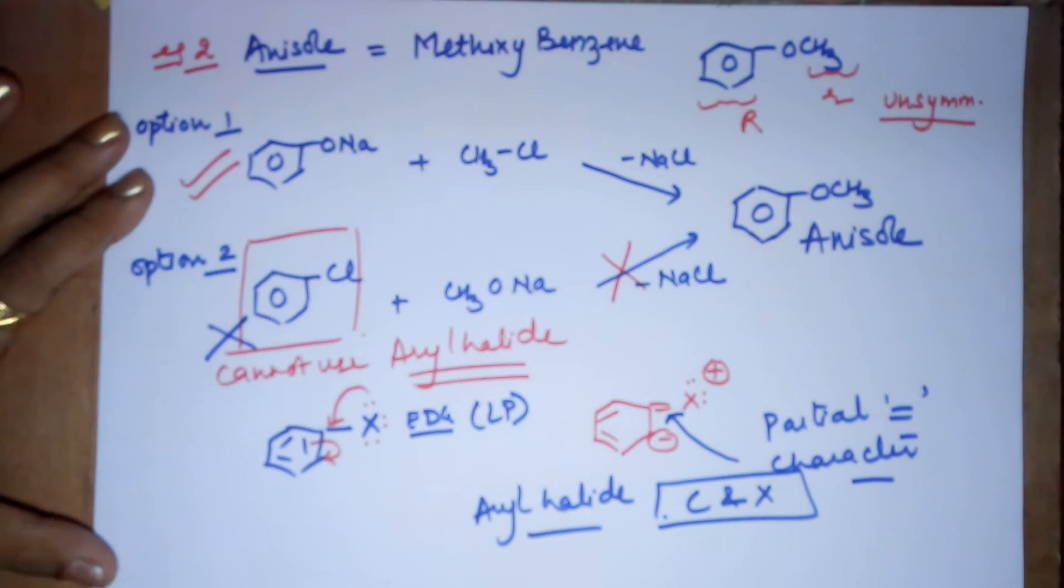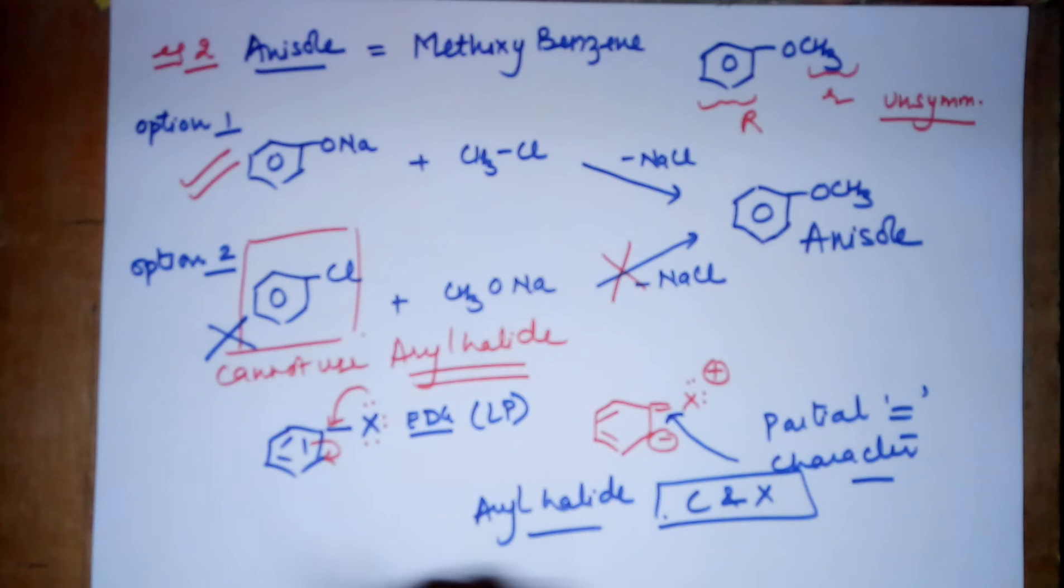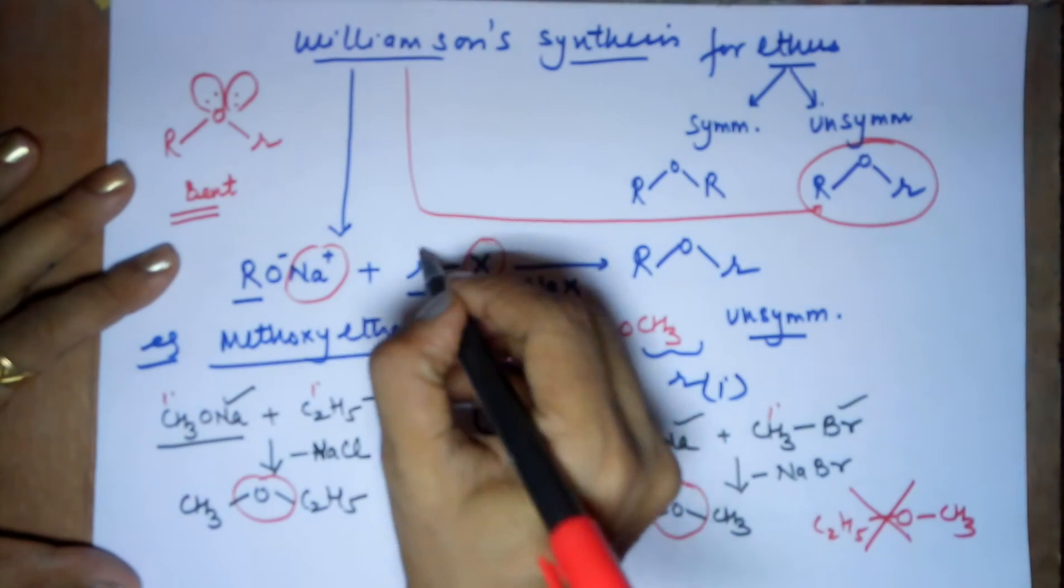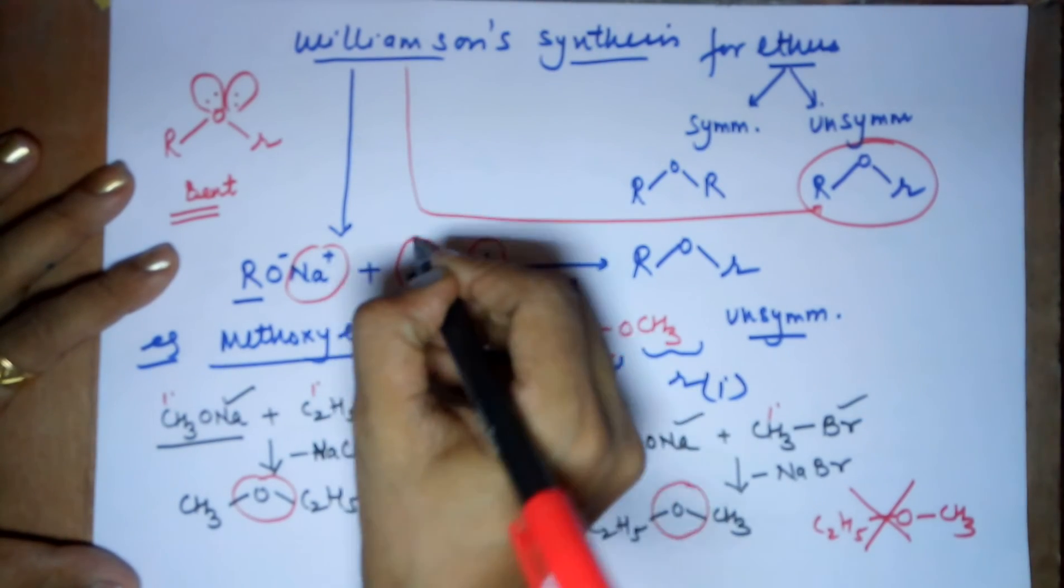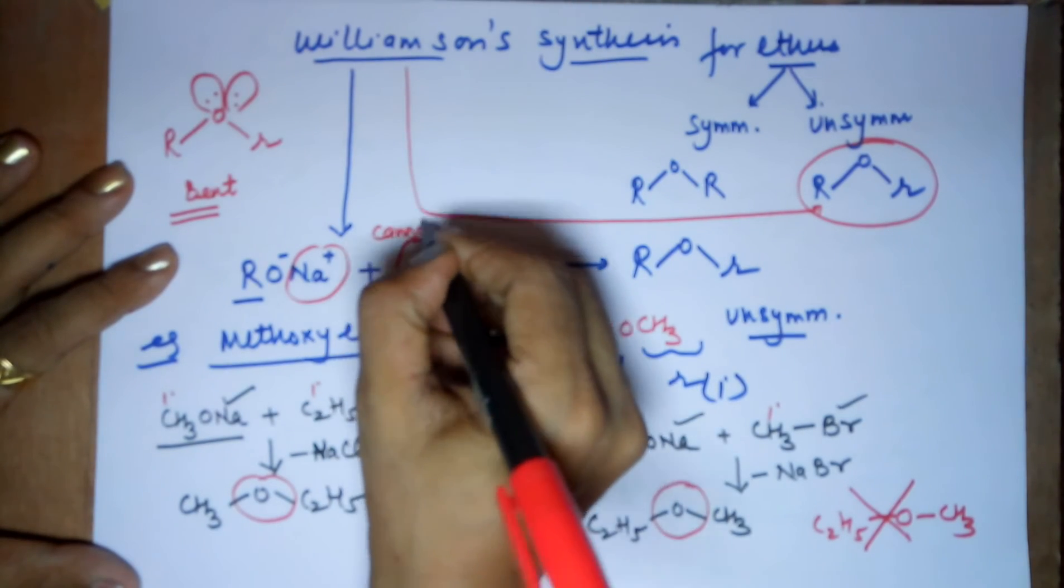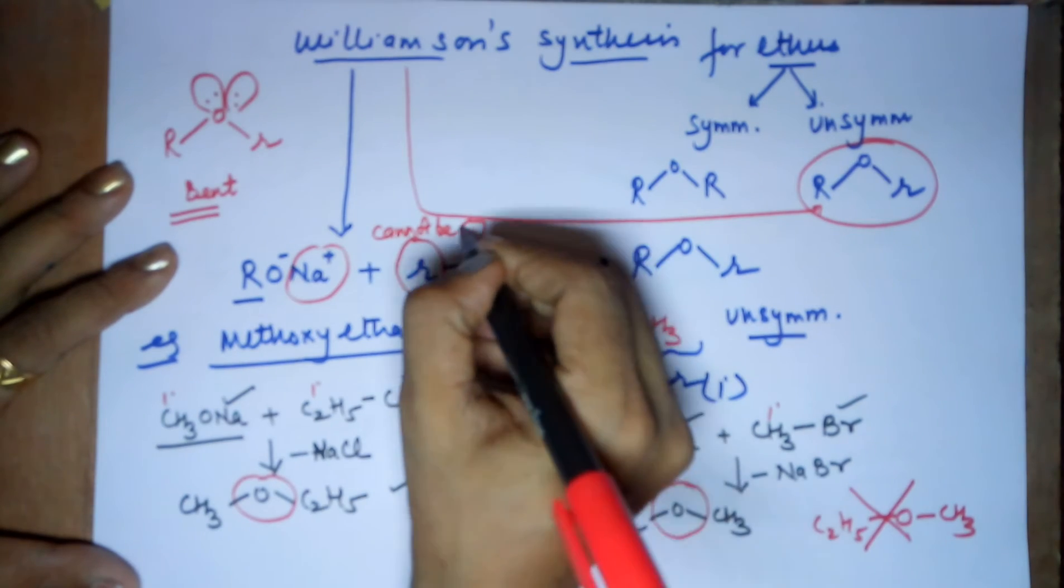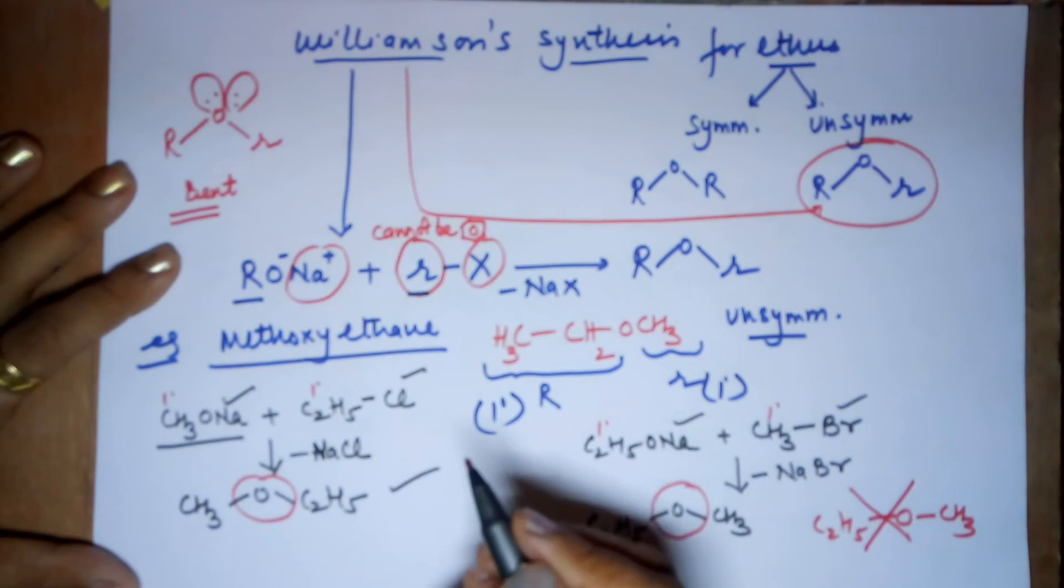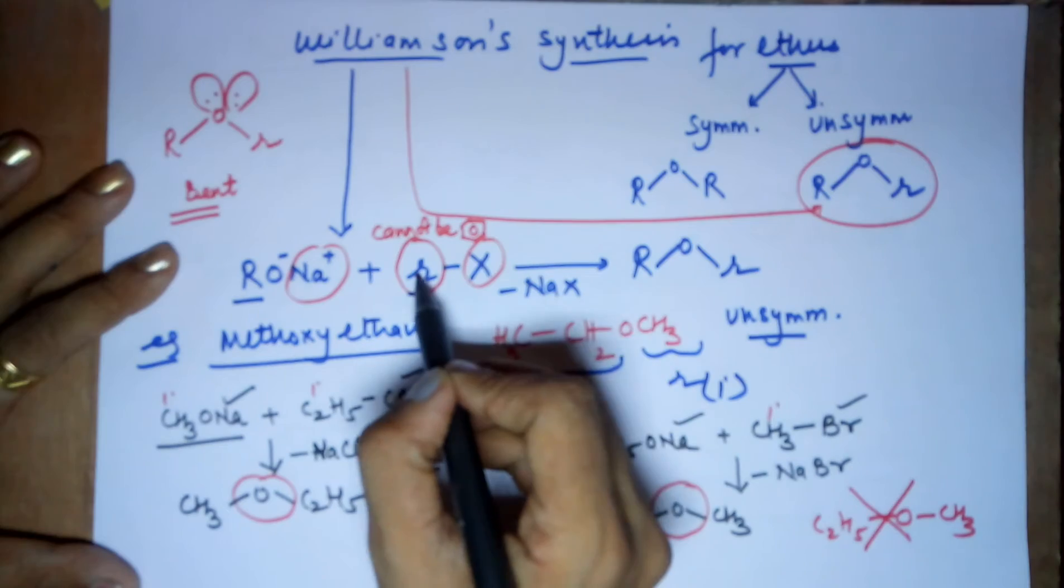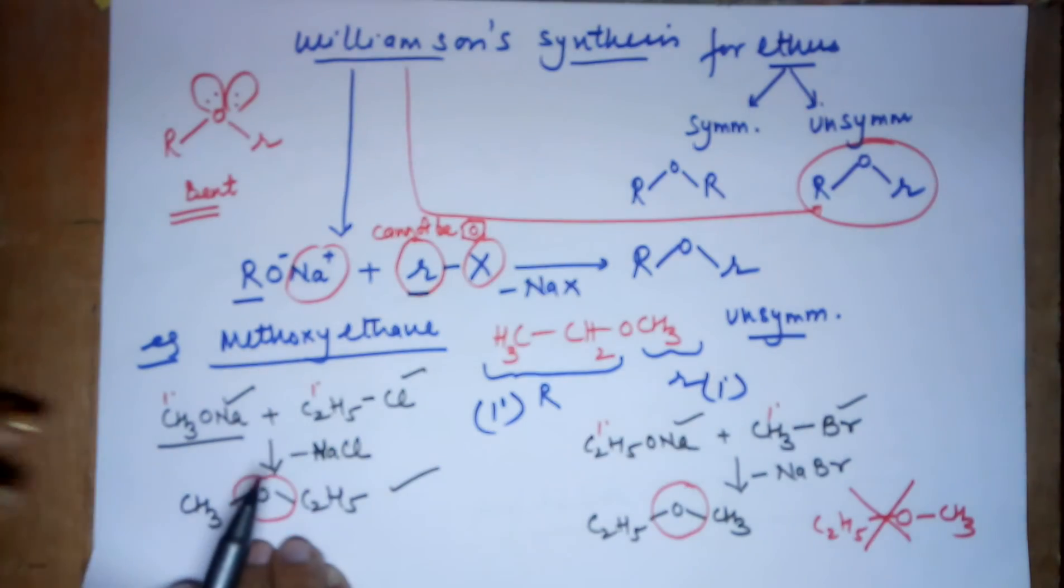You have a partial double bond character between carbon and X if you are using an aryl halide. Since there is a partial double bond character, this bond would not easily break. Hence, you should avoid the usage of aryl halide. Hence, the correct method is this. So, the first limitation to the Williamson's synthesis becomes that you cannot use benzene. That becomes our first limitation. Your halogen should not be attached to the benzene ring.